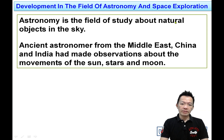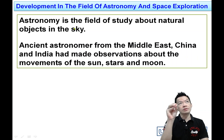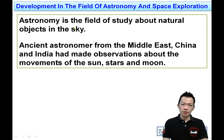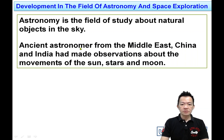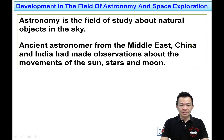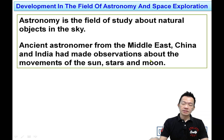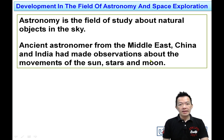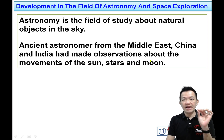So astronomy is a field of study about the natural objects in the sky. When you study the moon, the star, the sun, or all the planets in the sky, we call all this astronomy. Ancient astronomers from the Middle East, China, and India have made observations about the movement of the sun, stars, and the moon. Some of them even made records in books thousands of years ago.